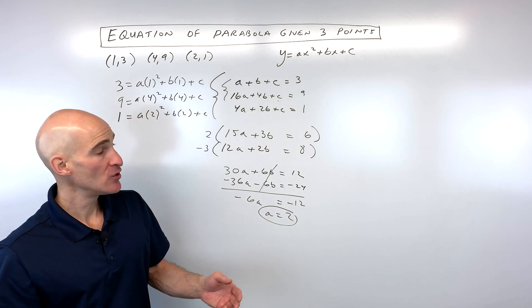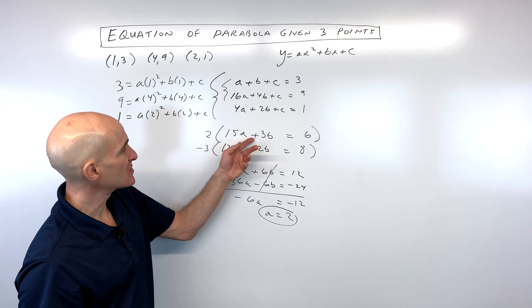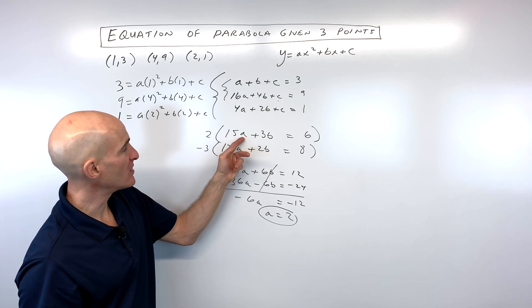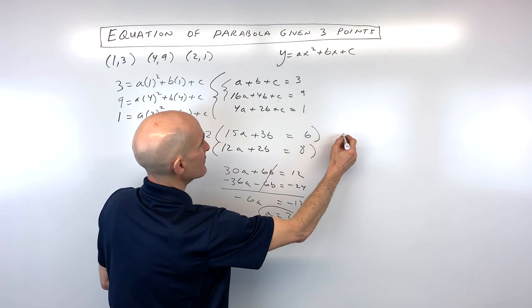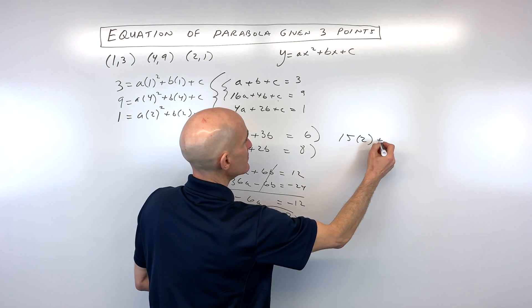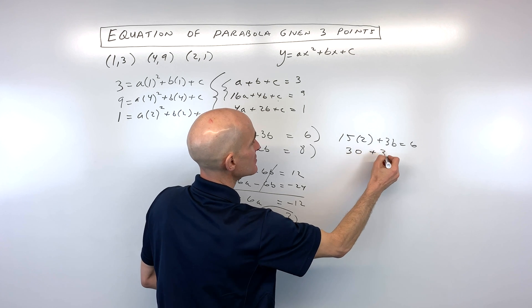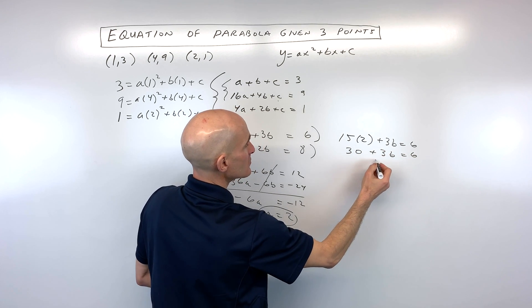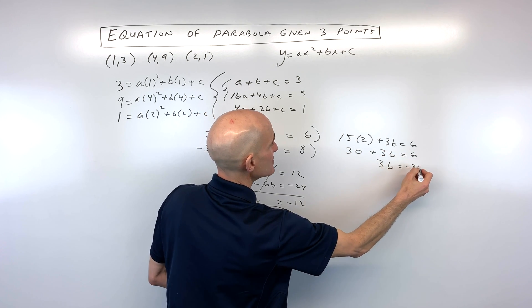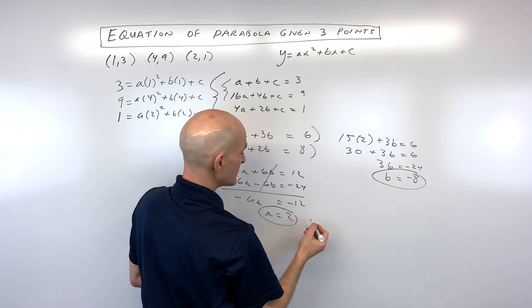So now what we need to do is work our way backwards. So if a is 2, let's go put a into this equation or this equation to solve for b. I'll put it into the top one. So that's going to give us, we've got 15 times 2 plus 3 times b equals 6. So we've got 30 plus 3b equals 6. Subtract 30 from both sides. That gives us negative 24. Divide both sides by 3. And we get b equals negative 8.